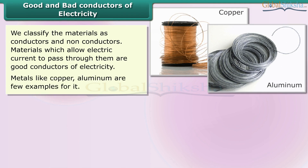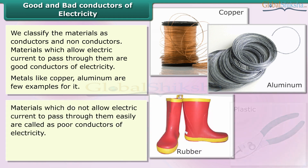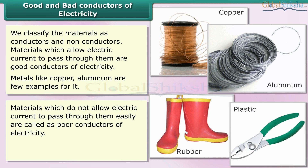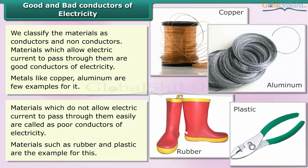Metals like copper and aluminium are few examples of good conductors. Materials which do not allow electric current to pass through them easily are called poor conductors of electricity. Materials such as rubber and plastic are examples of this. We use a tester to test the conductivity of materials which are in solid state.